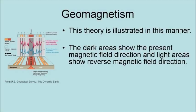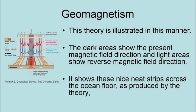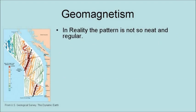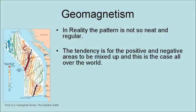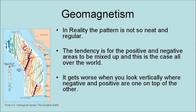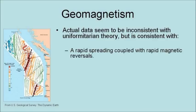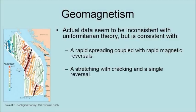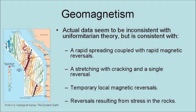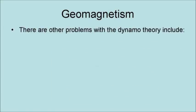Dark areas represent the present magnetic field direction and light areas show reverse magnetic field direction, with the theory predicting nice neat stripes across the ocean floor. In reality, the pattern is not so neat and regular — the positive and negative areas tend to be mixed up, and this is the case all over the world. It gets worse when you look vertically, where negative and positive zones are one on top of the other. Actual data seems inconsistent with uniformitarian theories, but consistent with rapid spreading coupled with rapid magnetic reversals, a stretching with cracking, a single reversal, temporary local magnetic reversals, or reversals resulting from stress in the rock.